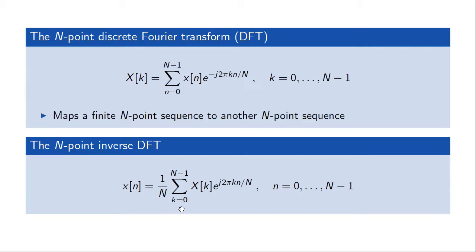The key differentiating thing compared to the discrete time Fourier transform is that in the discrete Fourier transform, these sums only run over N capital values, which makes them computable in practice.